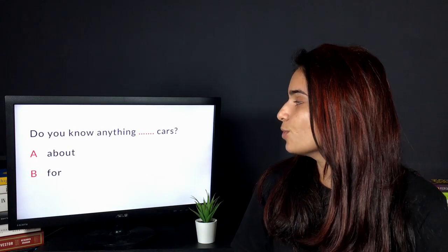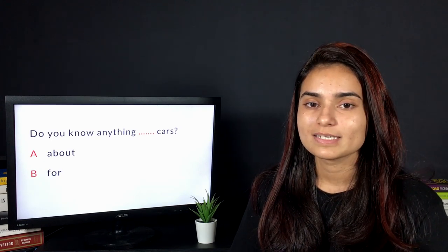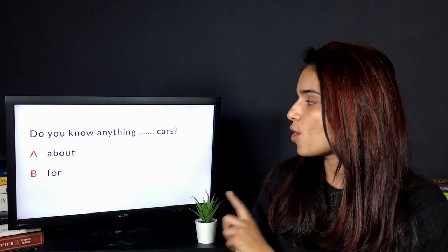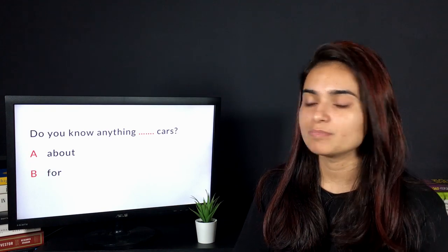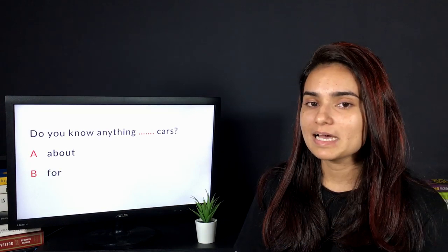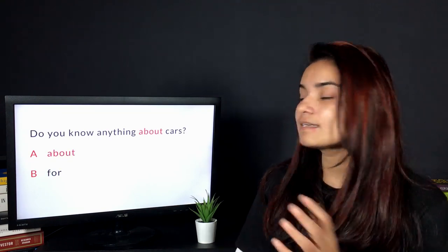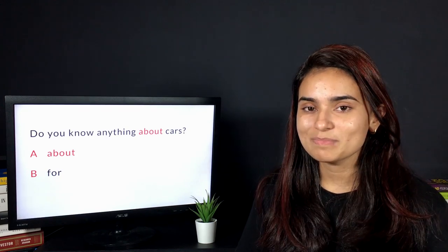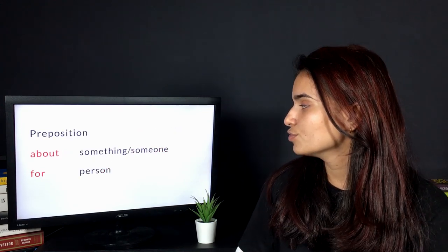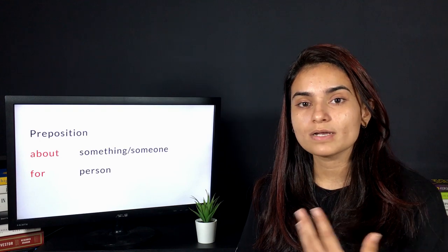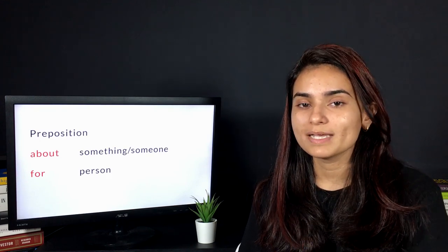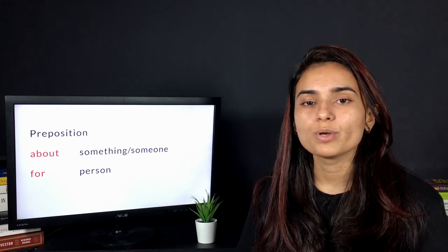Next question: Do you know anything dash cars? The answer has to be from option A, 'about,' or option B, 'for.' The correct answer is 'do you know anything about cars?' The reason is 'about' can be used for someone or something—it can be used for both cases—but 'for' is used only for a person.